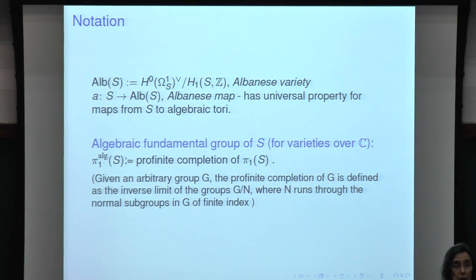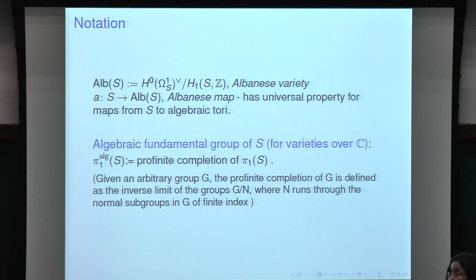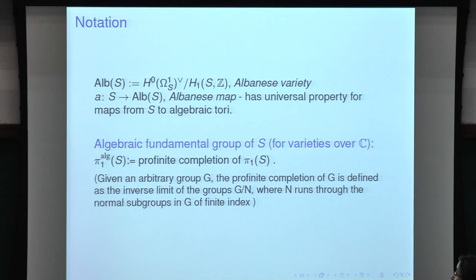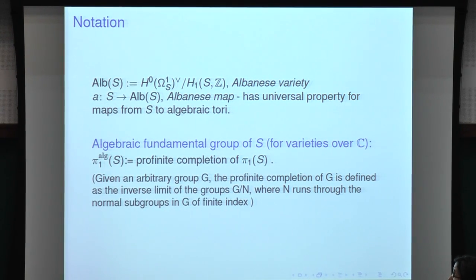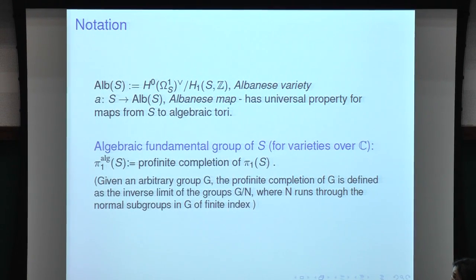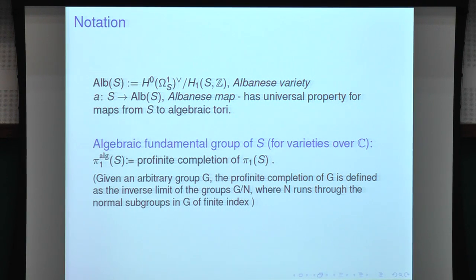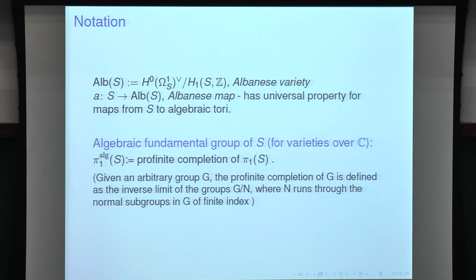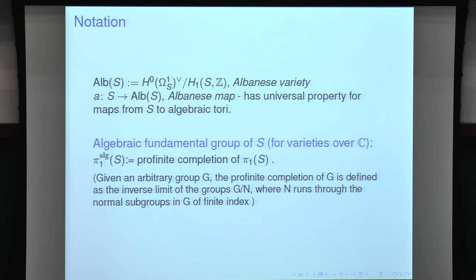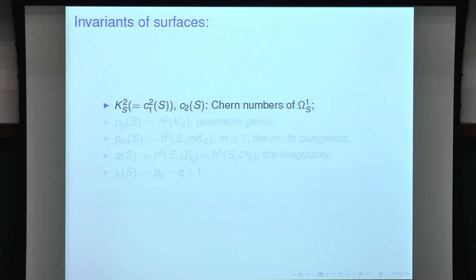I also want to consider the algebraic fundamental group of the surface. The algebraic fundamental group of a variety, in the complex case, is obtained as a profinite completion of the topological fundamental group. It goes by the name of étale fundamental group also, and it is to étale covers what the topological fundamental group is to topological coverings. Another important thing I'll need is the invariants of surfaces.